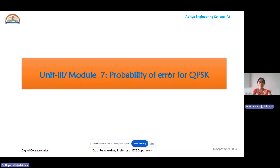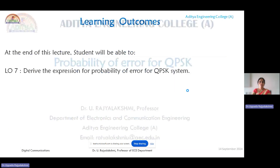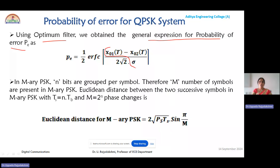Hello everyone. In this module we will discuss the calibration of probability of error for a QPSK system. Before proceeding, let us recollect the general expression for probability of error for an optimum filter. We know that it is expressed as half ERFC of (x₀₁(t) - x₀₂(t)) / (2√σ), where the output SNR is (x₀₁(t) - x₀₂(t)) / σ.